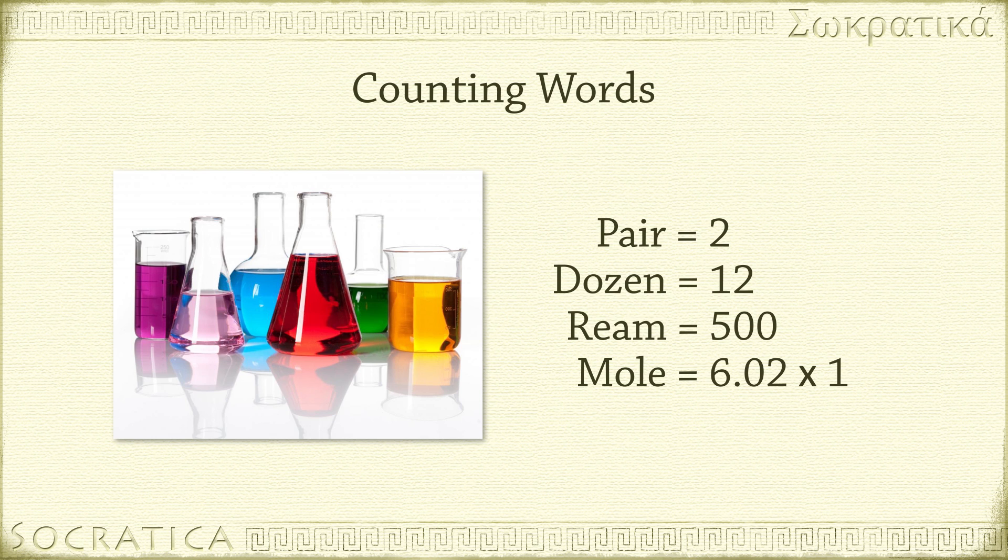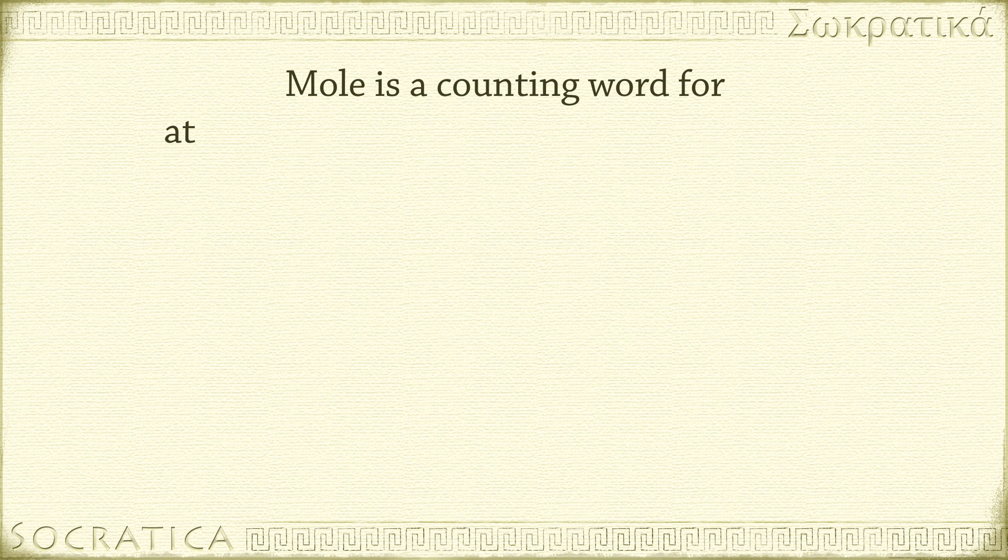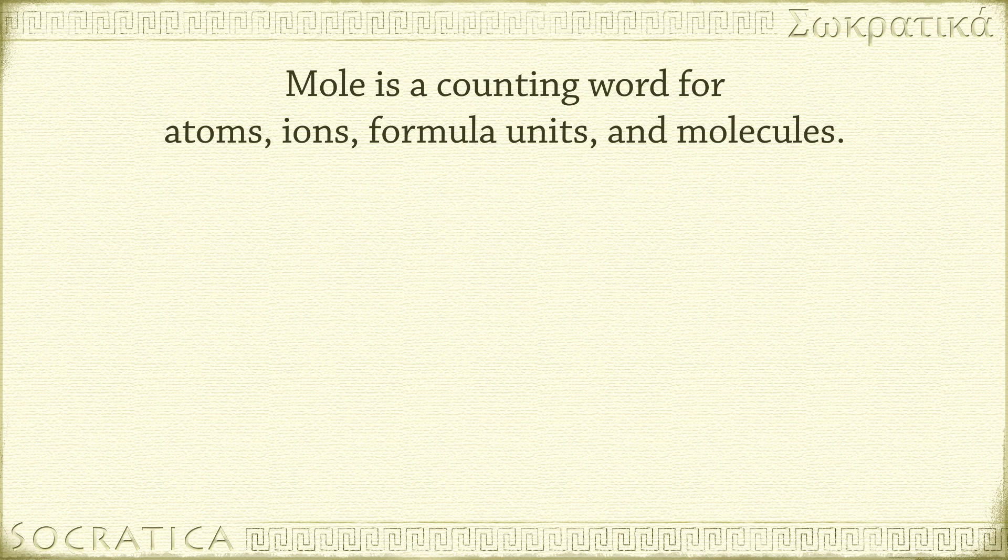6.02 times 10 to the 23rd objects. Now when I say objects, I mean atoms, or ions, or formula units in the case of ionic compounds, or molecules in the case of molecular compounds. Those are all what we call representative particles, the smallest unit of that material.